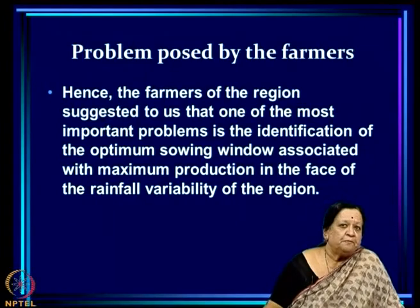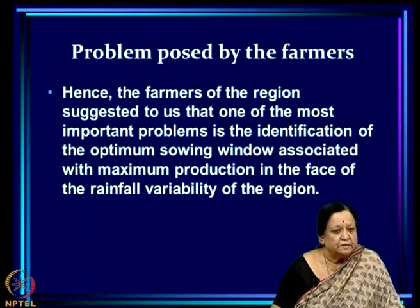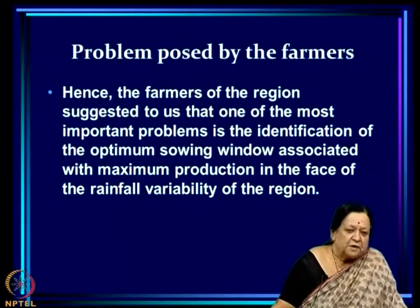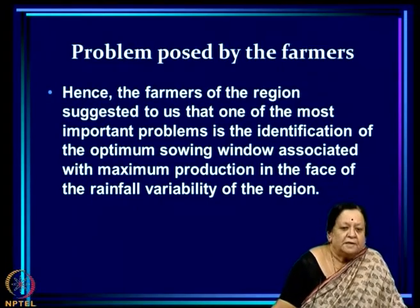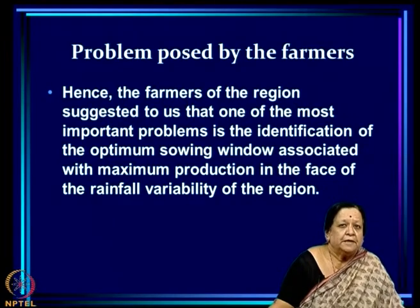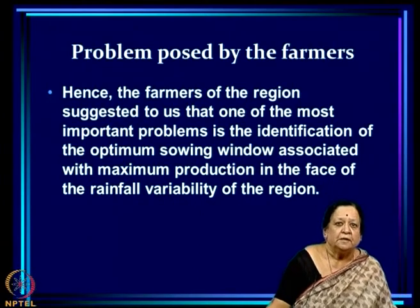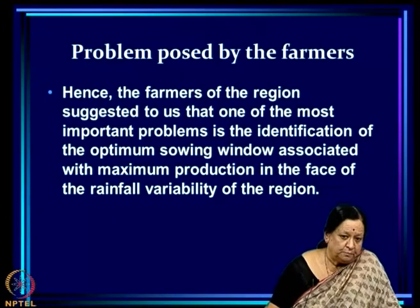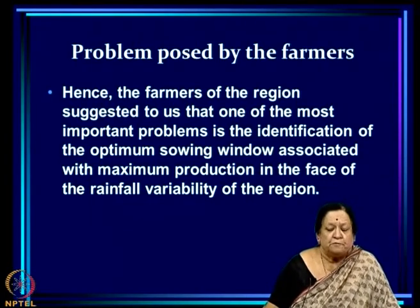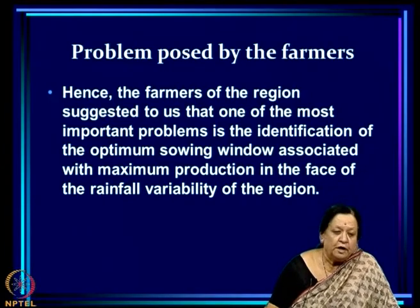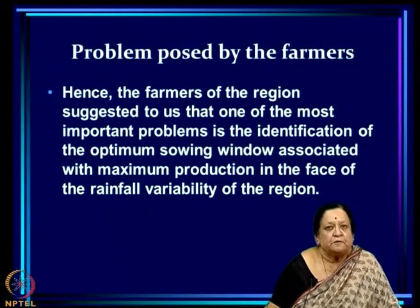The showing window farmers have adopted is 22nd June to mid-August, and within this window they sow at the first opportunity when soil is moist enough. When we called a meeting of farmers and asked what problems they wanted us to address in enhancing groundnut yields in the face of rainfall variability, they identified the identification of the optimum sowing window as most important — meaning the window associated with maximum production while minimizing the probability of crop failure altogether.